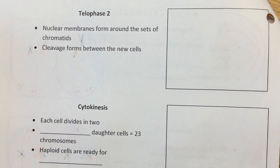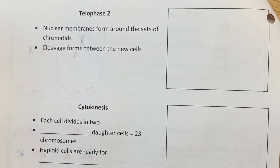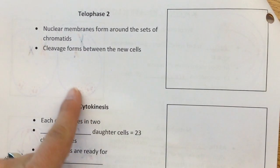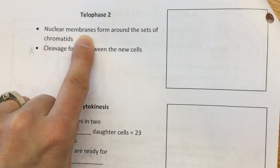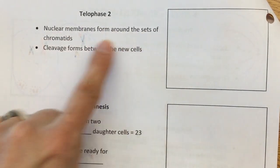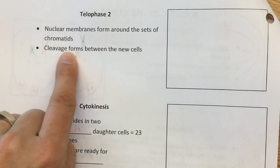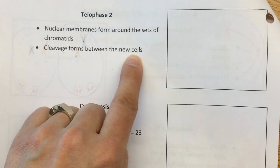Okay, it's time for our last two stages of meiosis II, and this is telophase II and cytokinesis. So in telophase II, the nuclear membranes form around the sets of chromatids, and cleavage forms between the two new cells.